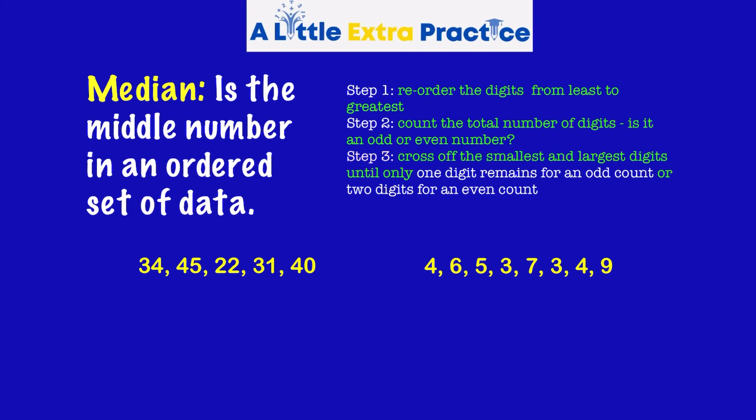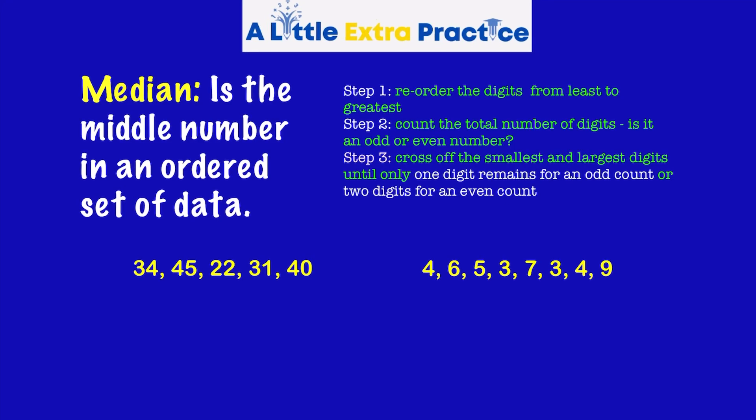Let's take a look at some practice problems. First step, I'm going to reorder these numbers from least to greatest. 22, 31, 34, 40, and 45. Step two, count the total number of digits. Is it an odd or even number?